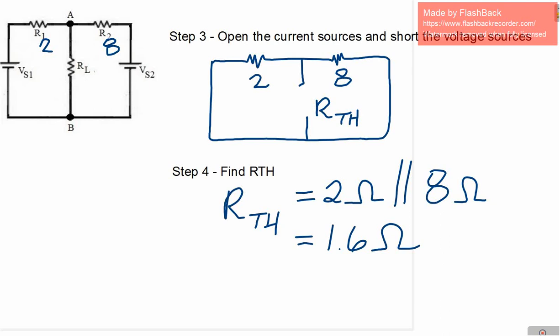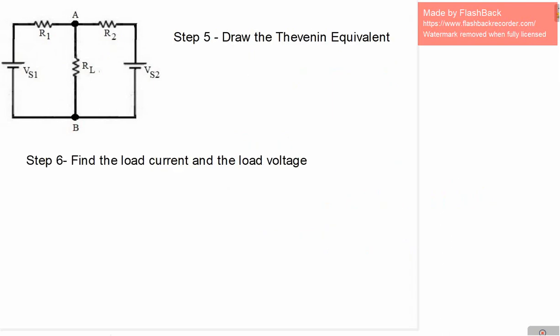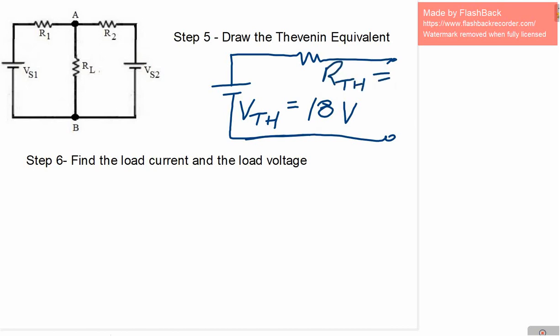So there, we now have the Thevenin voltage and now we have the Thevenin resistance. So we can draw the Thevenin equivalent circuit. So let's do that in step 5. So the Thevenin equivalent will look like this here. Remember, it's just one voltage source in series with one resistor. So the Thevenin voltage we calculated to be 18 volts and we calculated the Thevenin resistance to be 1.6 ohms.